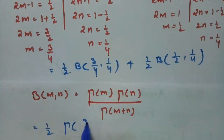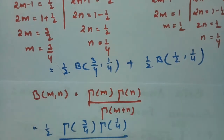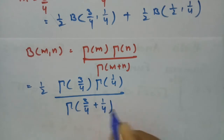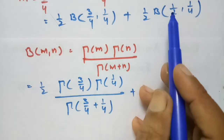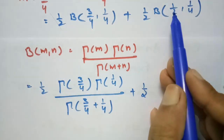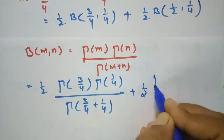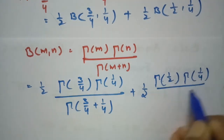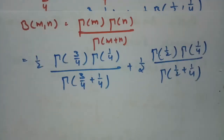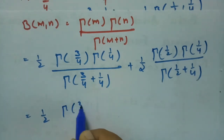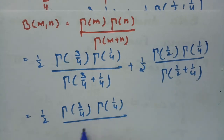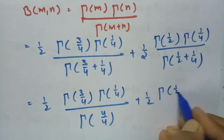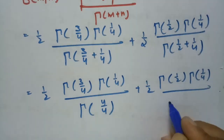Substituting, the first term becomes half times Γ(3/4)·Γ(1/4) / Γ(3/4 + 1/4), which is half times Γ(3/4)·Γ(1/4) / Γ(1). The second term becomes half times Γ(1/2)·Γ(1/4) / Γ(1/2 + 1/4), which involves Γ(1/2) in the numerator and Γ(3/4) in the denominator.